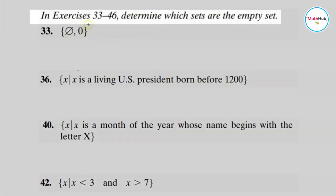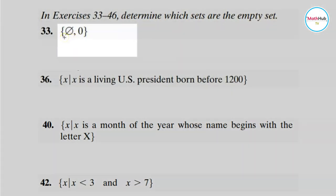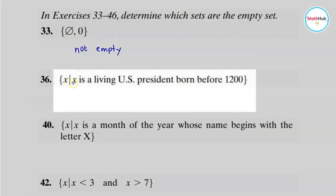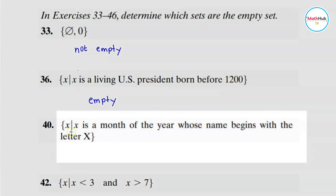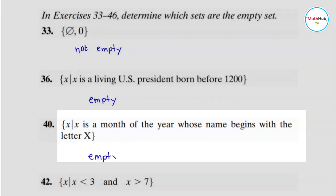Now for the next set of exercises, we will determine which sets are empty. Number 33: this set contains an empty set and zero — this one is not empty. Next, the set of all x such that x is a living U.S. president born before 1200 — this one is empty, because the first U.S. presidential election was in 1789. Number 40: the set of all x such that x is a month of the year whose name begins with the letter X — we don't have such a month, so number 40 is an empty set.